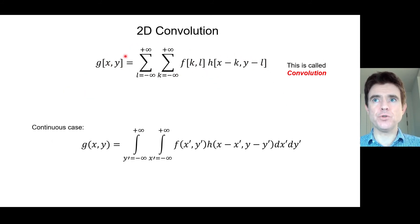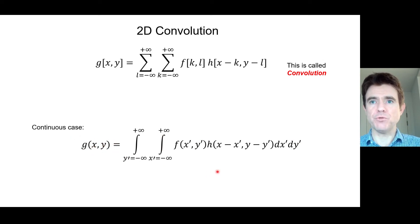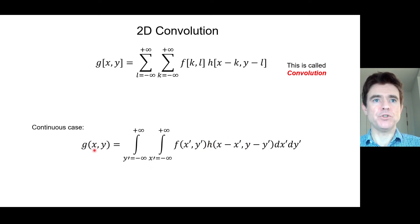That was the case of discrete 2D convolution, which naturally relates to the continuous convolution integral: we have some function F indexed using dummy variables of integration X′ and Y′, meaning we visit all locations in F and use those values to weight the point spread function — the convolution kernel H — shifted to X′ and Y′. We sum over all possible XY positions, and integrating over X′ and Y′ leaves us with G as a function of X and Y only on the left-hand side.